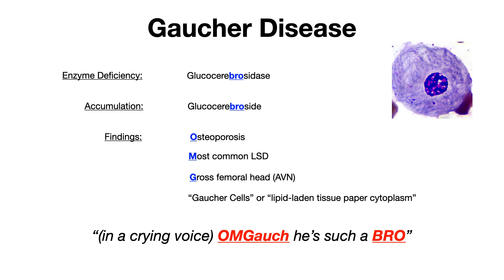The mnemonic for Gaucher disease is, in a crying voice: 'Oh my gosh, he's such a bro.' You say it in a crying voice because you need to remember tissue paper cytoplasm — you use tissues to wipe tears. OMG stands for: O = osteoporosis, M = most common lysosomal storage disease, G = Gaucher and gross femoral head (avascular necrosis). And 'bro' reminds you of glucocerebrosidase and glucocerebroside.